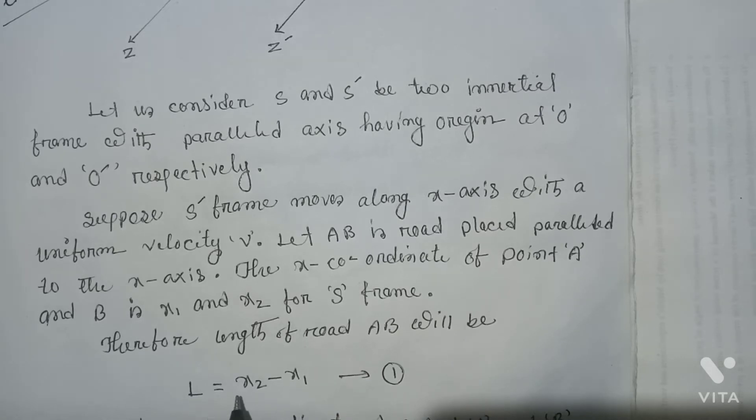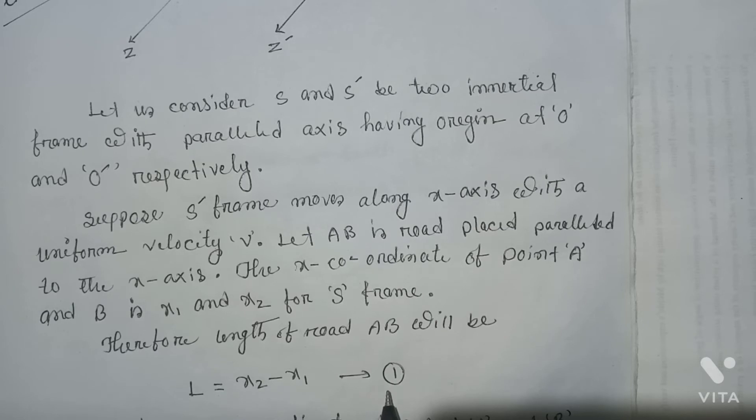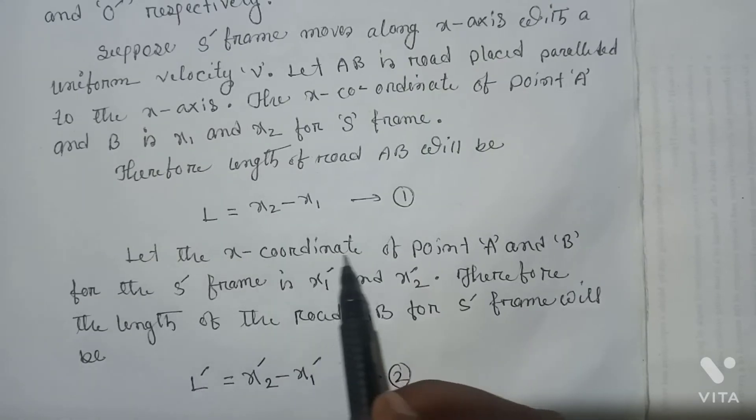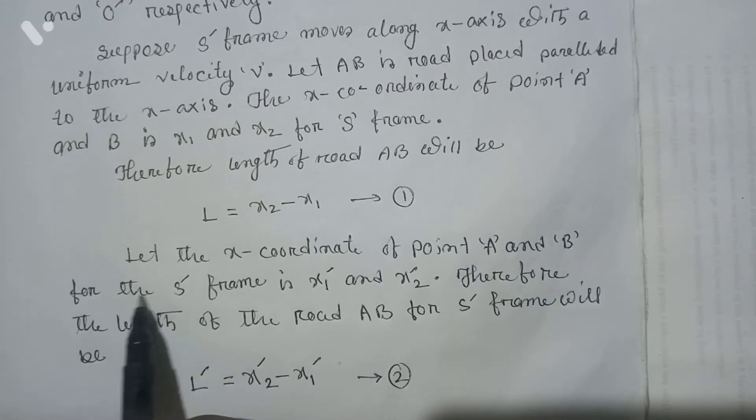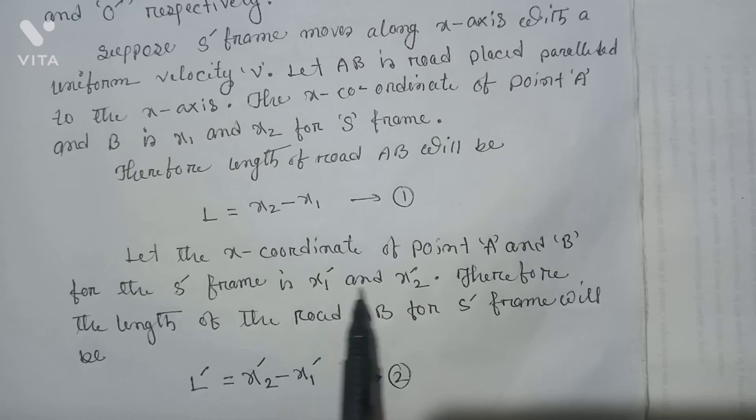Let the x-coordinates of points A and B for the S' frame be x'₁ and x'₂. Therefore the length of rod AB for S' frame will be L' = x'₂ - x'₁, which is equation 2.